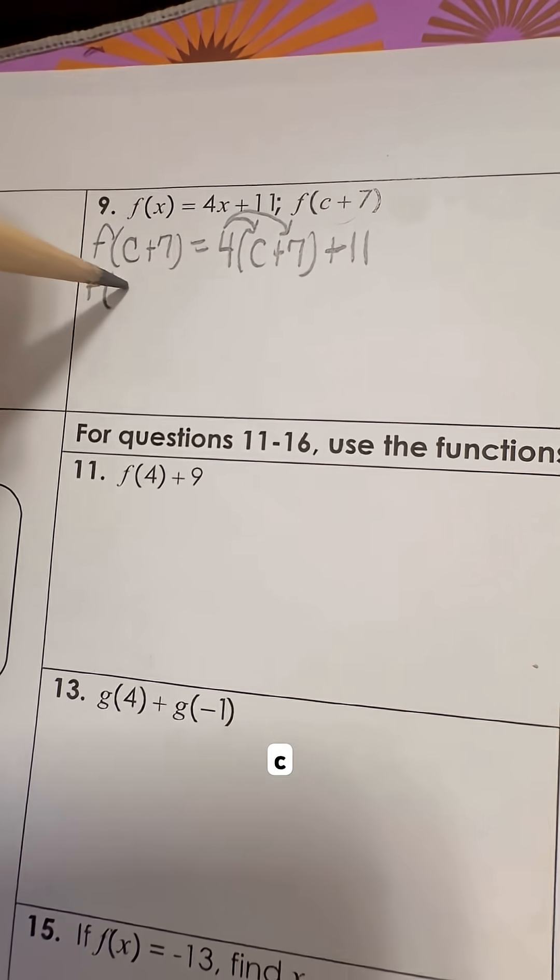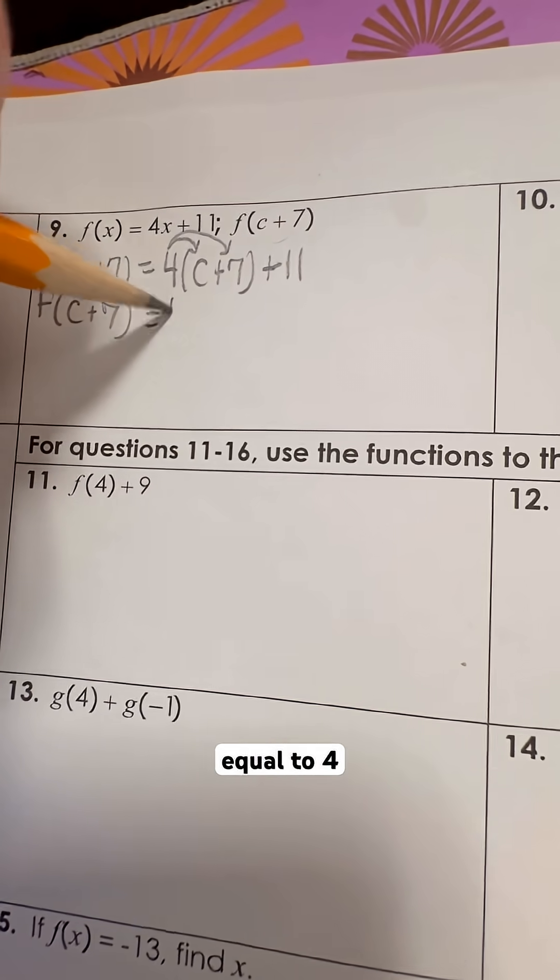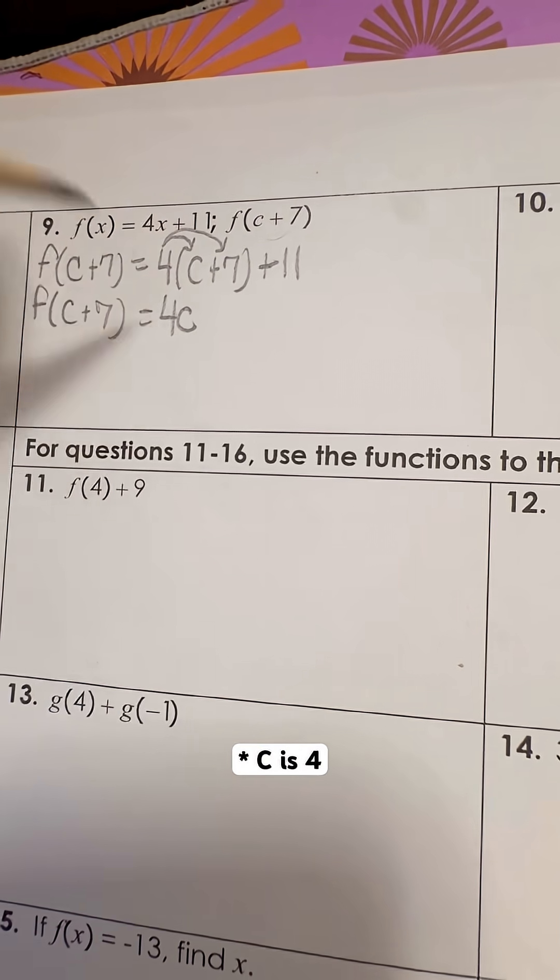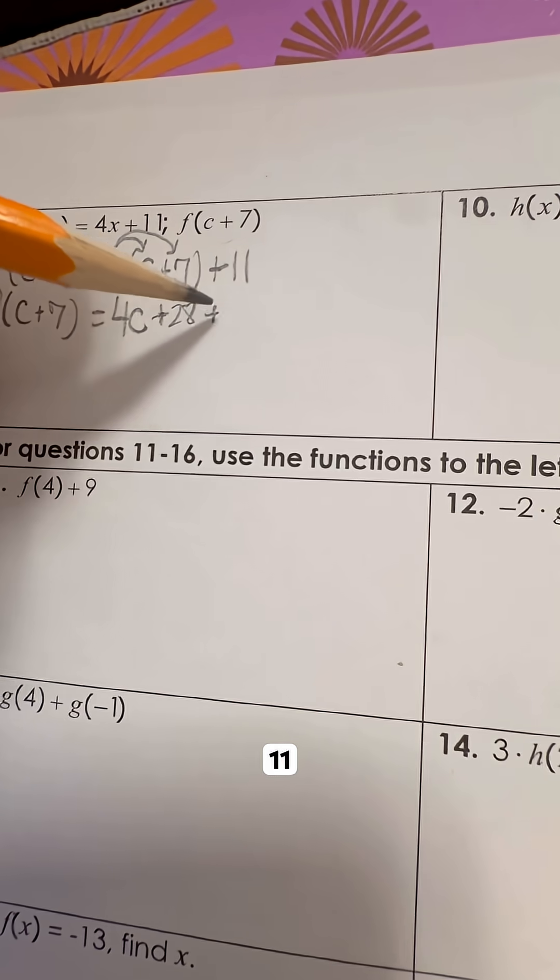So that means that f of c plus 7 is equal to 4c. 4 times c is 4c. 4 times 7 is 28. And then we have that plus 11.